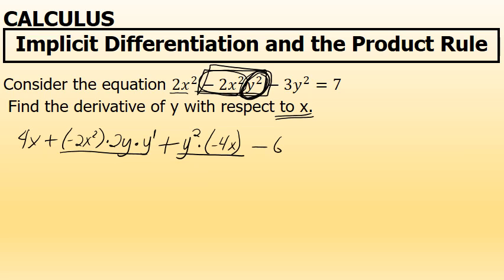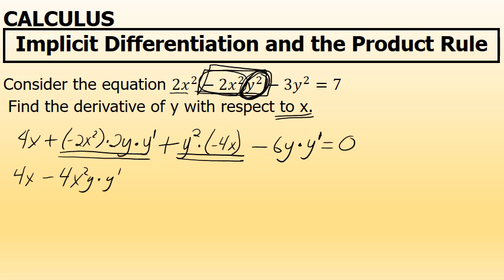The last term, negative 3y squared, has a derivative of negative 6y, but since that variable is y and I'm differentiating with respect to x, I'll include a factor of y prime. On the other side of the equation is 7, and differentiating both sides, the derivative of 7 is 0. I'll clean up: negative 2x squared times 2y times y prime becomes negative 4x squared y times y prime, and y squared times negative 4x becomes negative 4xy squared.